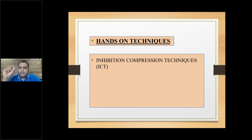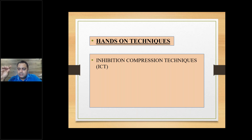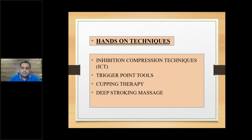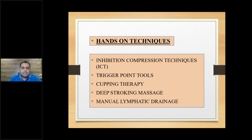One hands-on method is the inhibition compression technique: identify the trigger point, compress and hold for five seconds, release, again hold for five seconds and release. This breaks the hardness and stiffness in that particular muscle, literally dissolving the trigger point. There are also various handmade tools used to release trigger points. Dry cupping has been found very effective in trigger point therapy. Deep stroking massage is also used — similar to rolling over a ball. We use hands with specific steps in massage, and also manual lymphatic drainage to release the congestion in the muscle and aid circulation.